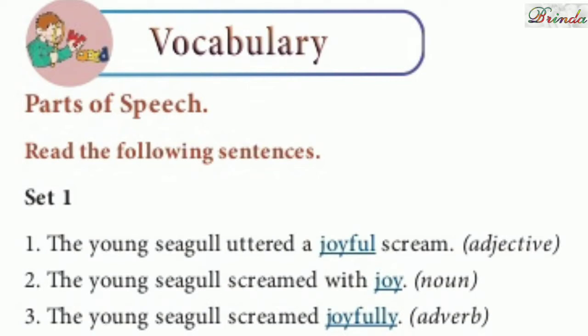The second sentence is: the young seagull screamed joy. Here, 'joy' is a noun. So first 'joyful' is adjective, and now this is noun. Third one: the young seagull screamed joyfully. So 'screamed' — how is he screaming? Joyfully. This is an adverb. Adverb means the word which qualifies a verb.